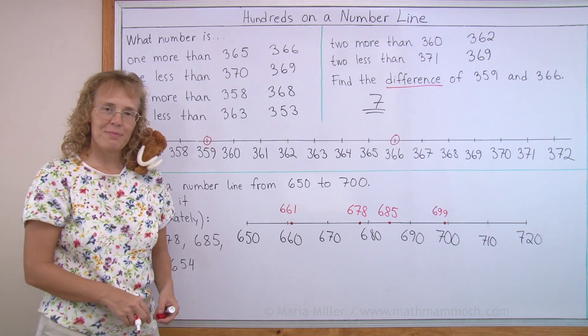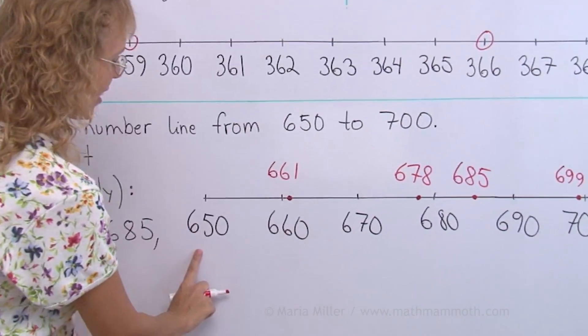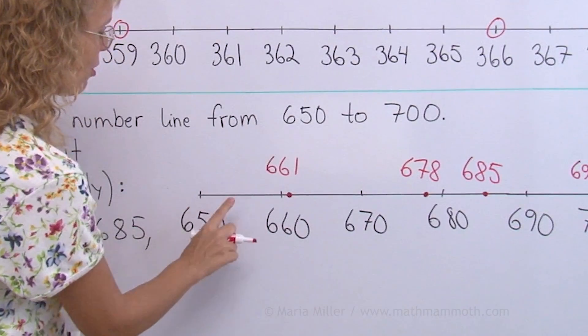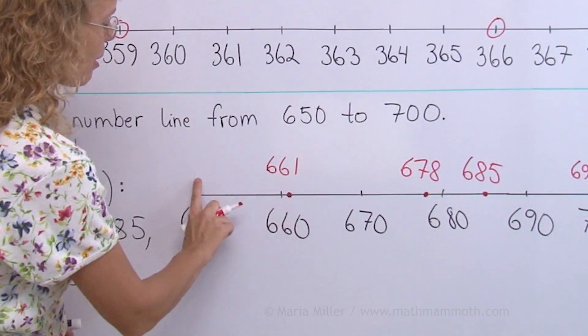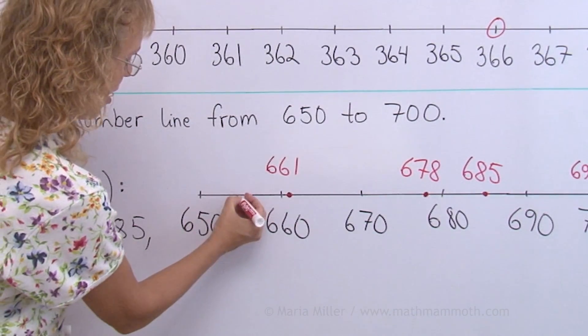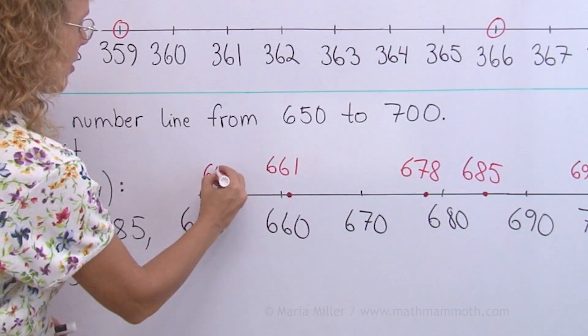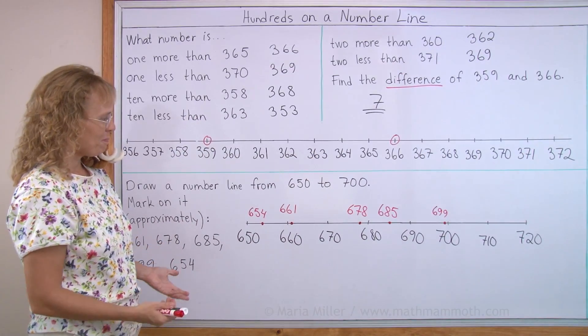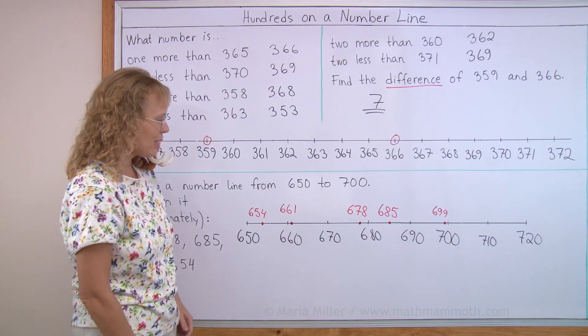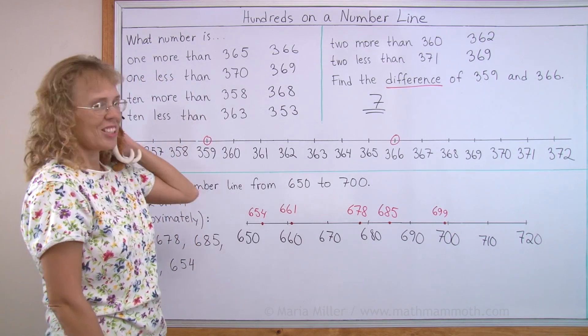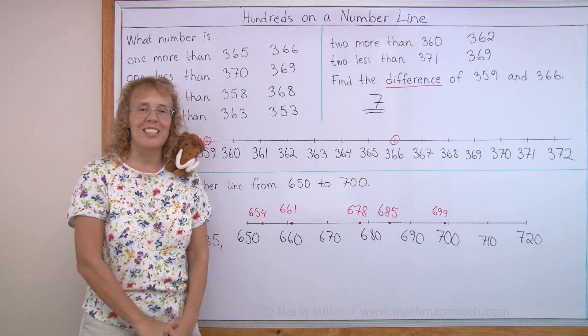654. 650, and then I imagine four steps, you know, if there's 10 steps here, I imagine taking four almost to the half point, half point but not quite. 654. There. Doesn't it look pretty, Matthew? Sure does. He agrees. We're all done with this lesson.